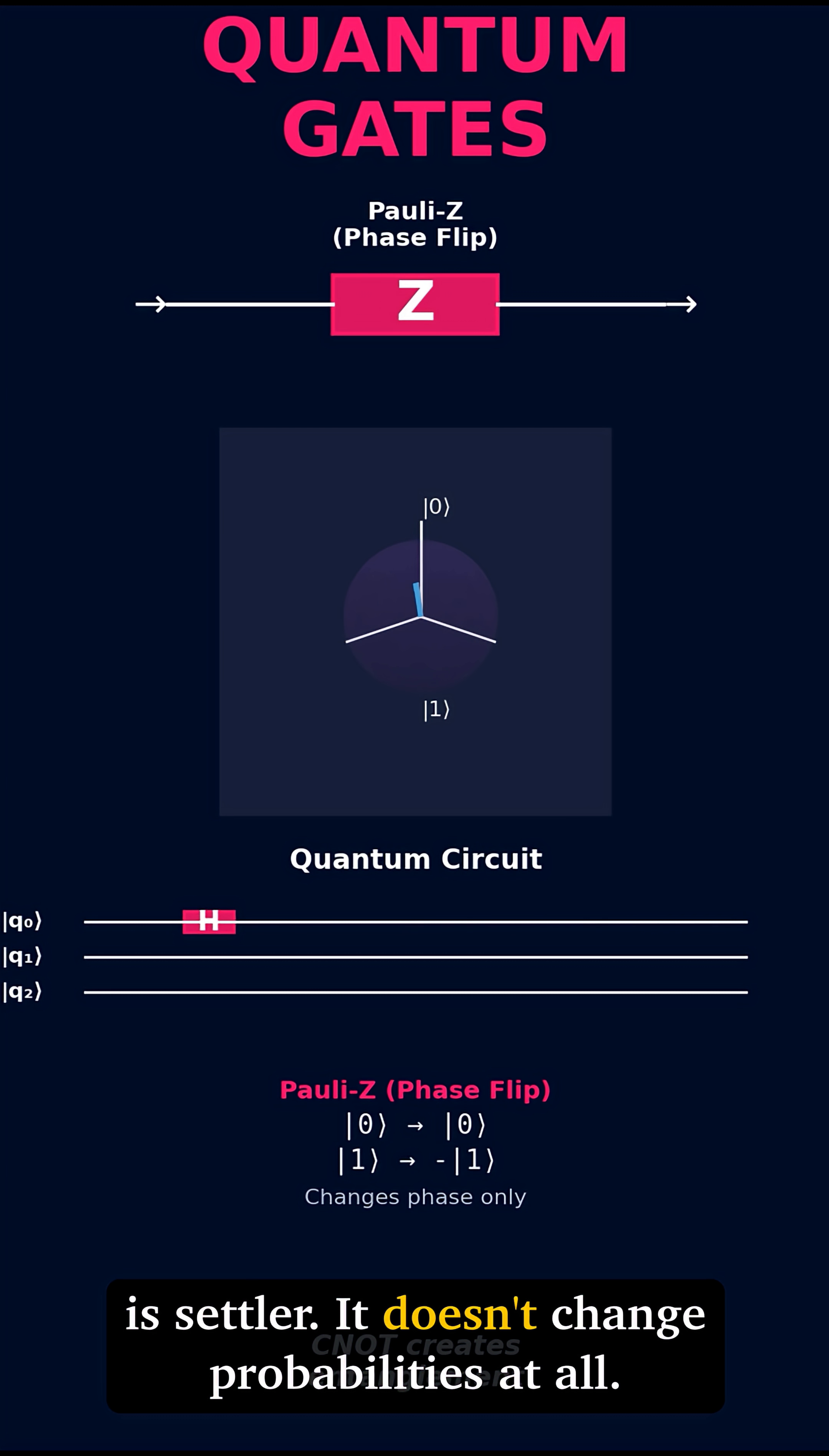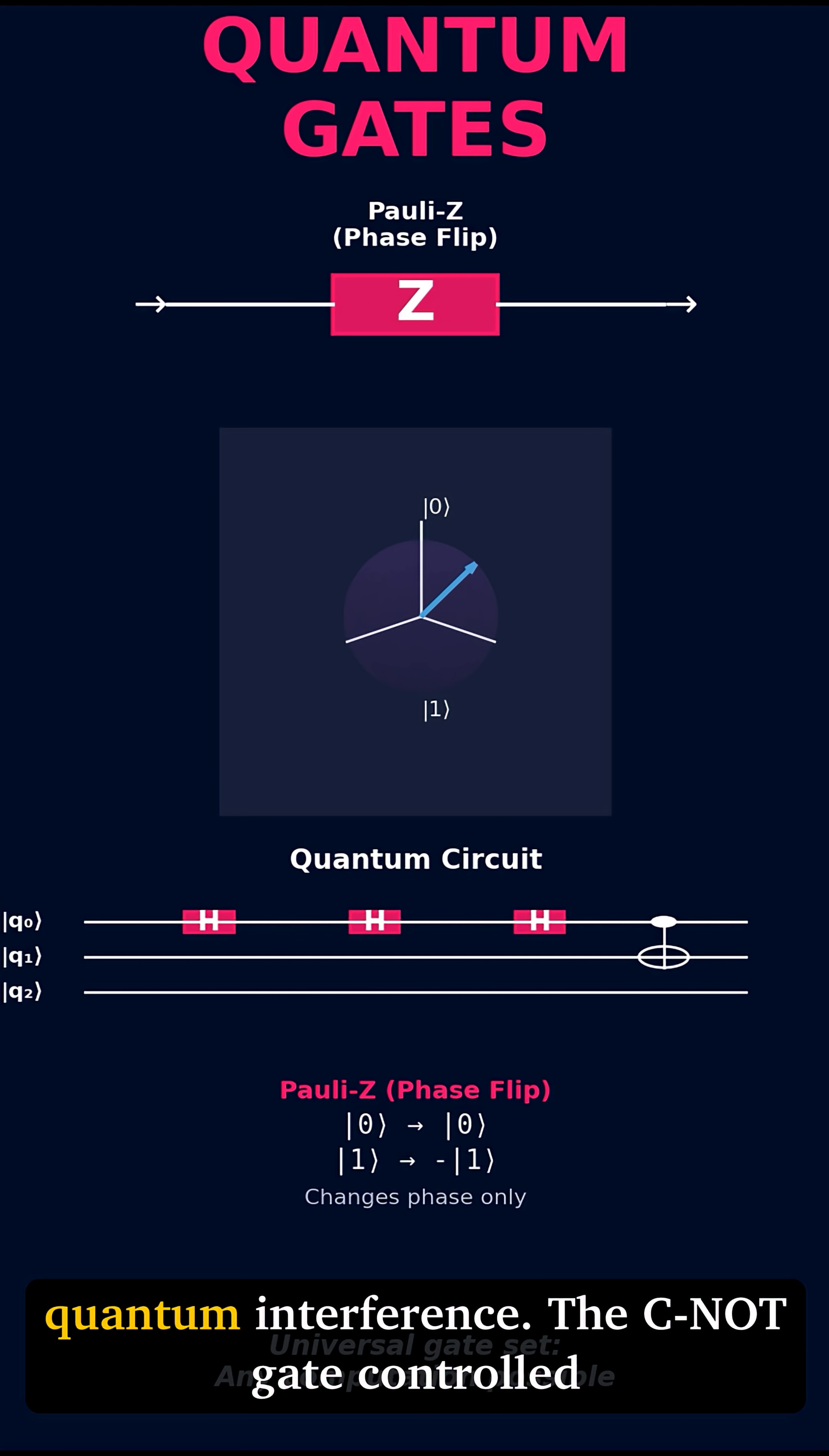The Z gate is subtler. It doesn't change probabilities at all. It just flips the phase. This is what enables quantum interference.